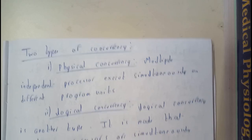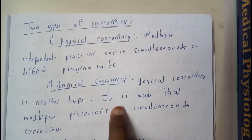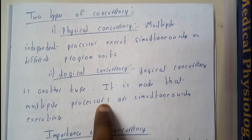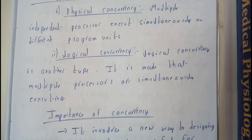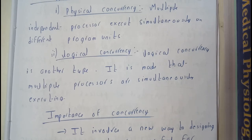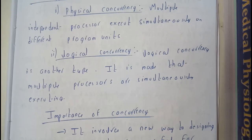Logical concurrency is another type. It is where multiple processors are simultaneously executing on a single unit or single block of a program.